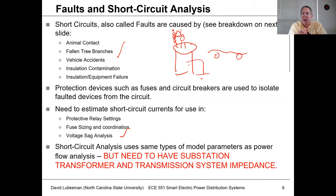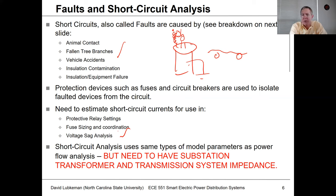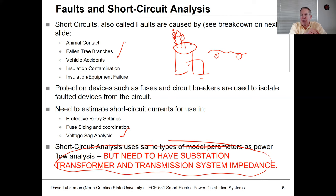We still use the same wire models as before — overhead, cable, etc. But what we have to add, which we don't need for power flow, is the substation transformer and transmission system impedance. A lot of times this is provided as one set of values, which I provide in the project spreadsheet.